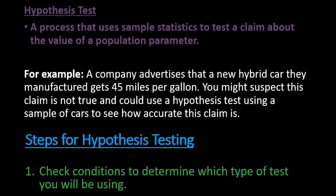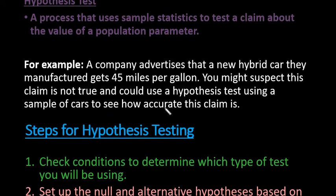For example, a company advertises that a new hybrid car they manufactured gets 45 miles per gallon. You might suspect this claim is not true and could use a hypothesis test using a sample of cars to see how accurate this claim is. So you might go and sample 30 cars, drive them in different conditions, and see what their average miles per gallon are and compare it to the advertised claim. With this, you will always need to have a claim that you are trying to test and then you will set up your test in a specific way.